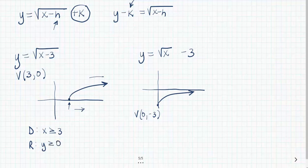In our second example, the x values start at 0. So x can be greater than or equal to 0. And the range starts down at negative 3. So y can be greater than or equal to negative 3.